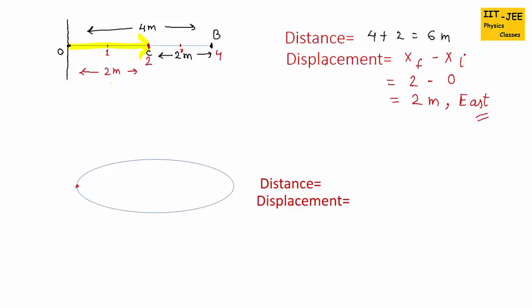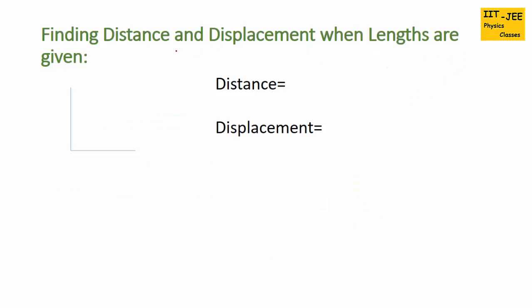Next example: suppose a person starts from point A, moves along a round path, and comes back to the original position, having traveled a total of 400 meters. So distance would be 400 meters. But displacement would be 0 because the starting and ending points are the same — the length between them is 0, so displacement is 0.